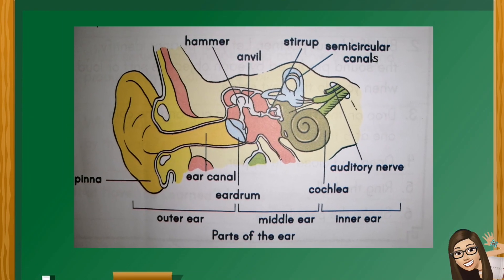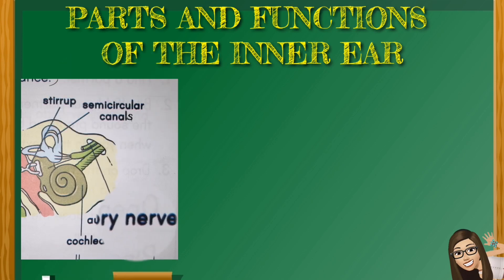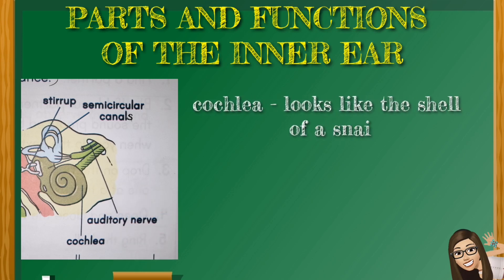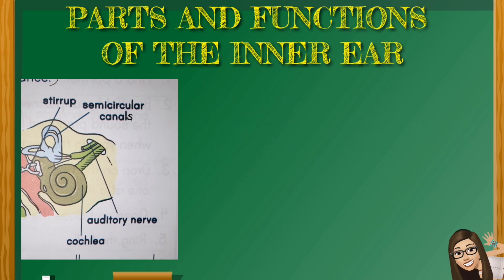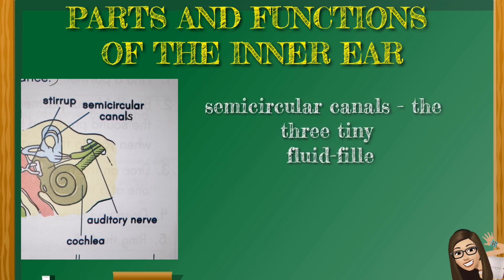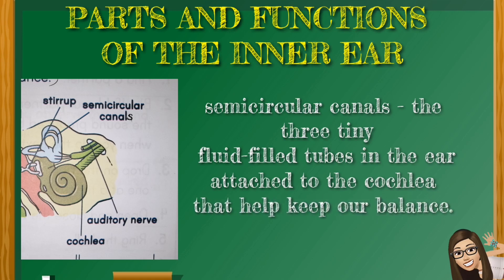Moving on to the parts and functions of the inner ear: The inner ear is the innermost part of the ear. It includes the cochlea, the semicircular canals, and the auditory nerve. The cochlea looks like the shell of a snail and is lined with tiny hair cells that change sound waves into nerve signals. The semicircular canals are three tiny fluid-filled tubes attached to the cochlea that help keep our balance.